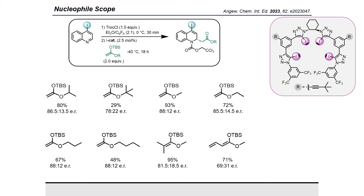Our next step was to screen different TBS-protected silyl ketene acetals and a TBS-protected dienolate. The linear acyl groups at the oxygen led to higher enantiomeric ratios, except for the acyl chain. Since the methoxy nucleophile was more reactive and additionally commercially available, we decided to screen different 4-iodoquinolines with this nucleophile.